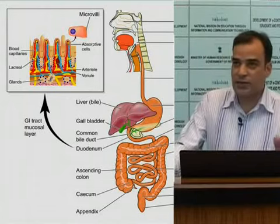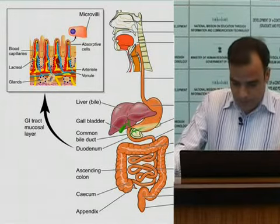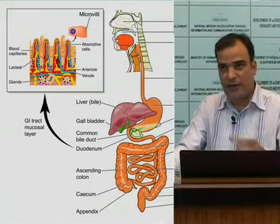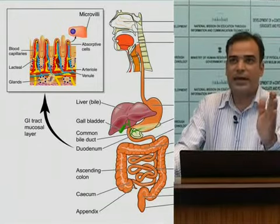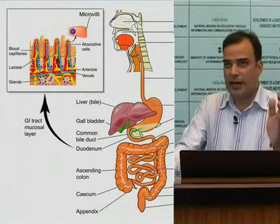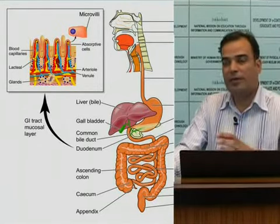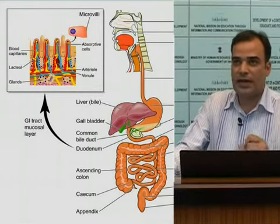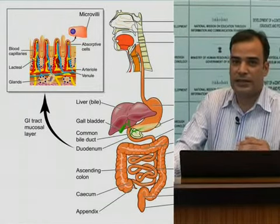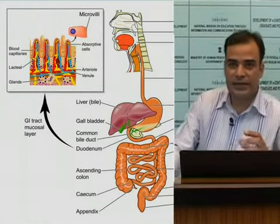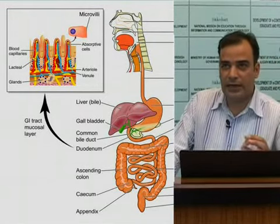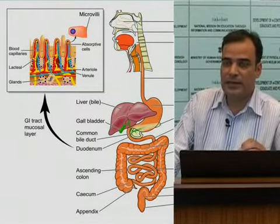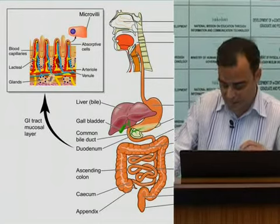The accessory digestive organs are not part of the main digestive tract, but they are associated with it and help in many different functions. These accessory digestive organs are: teeth, tongue, salivary glands, pancreas, and liver.